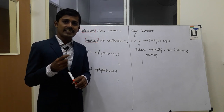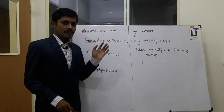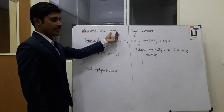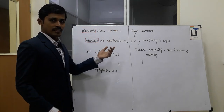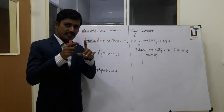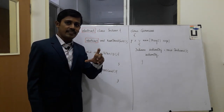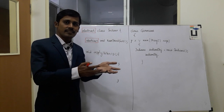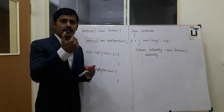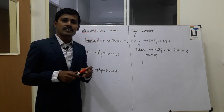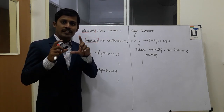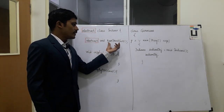Then we will create an Indian class. Indians are creating a class. In the class, there is a 'have breakfast' method. In Indians, there is no definition for 'have breakfast'. You can speak in Tamil Nadu, Malayali, Orisa — in the Indian class, there is no definition for 'have breakfast'.